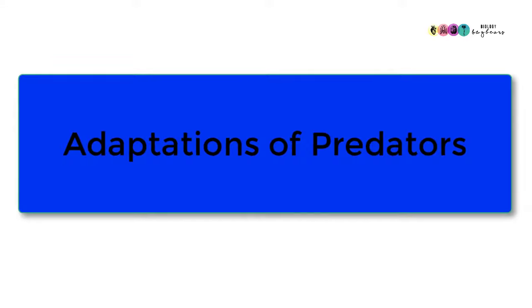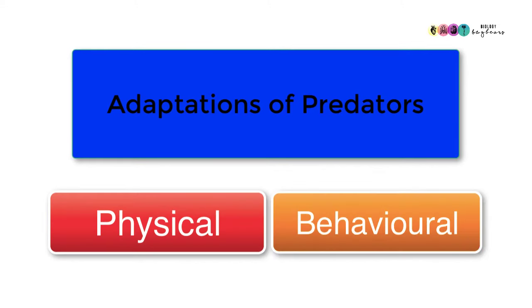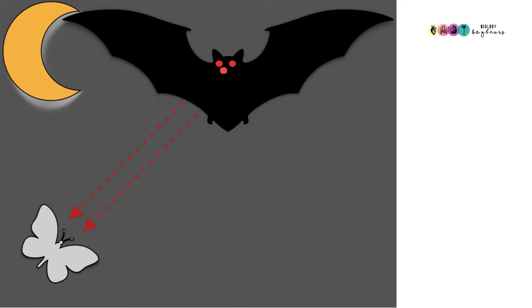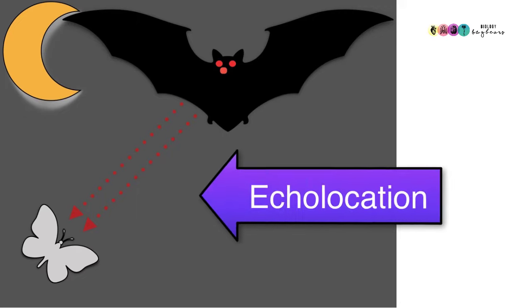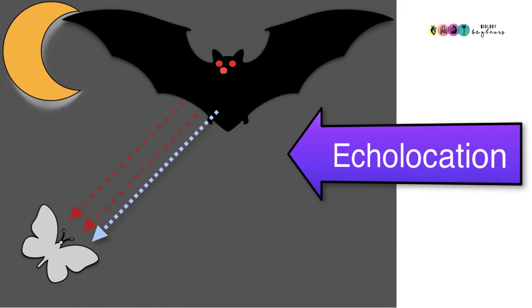Let's look at the adaptations of predators. There are both physical and behavioural ones. Bats are really excellent predators and they are very good at catching their prey which are moths and they do this by echolocation. The bat emits a sound, the sound hits off the moth, returns to the bat and this is how the bat can figure out where that moth is and go and catch it.